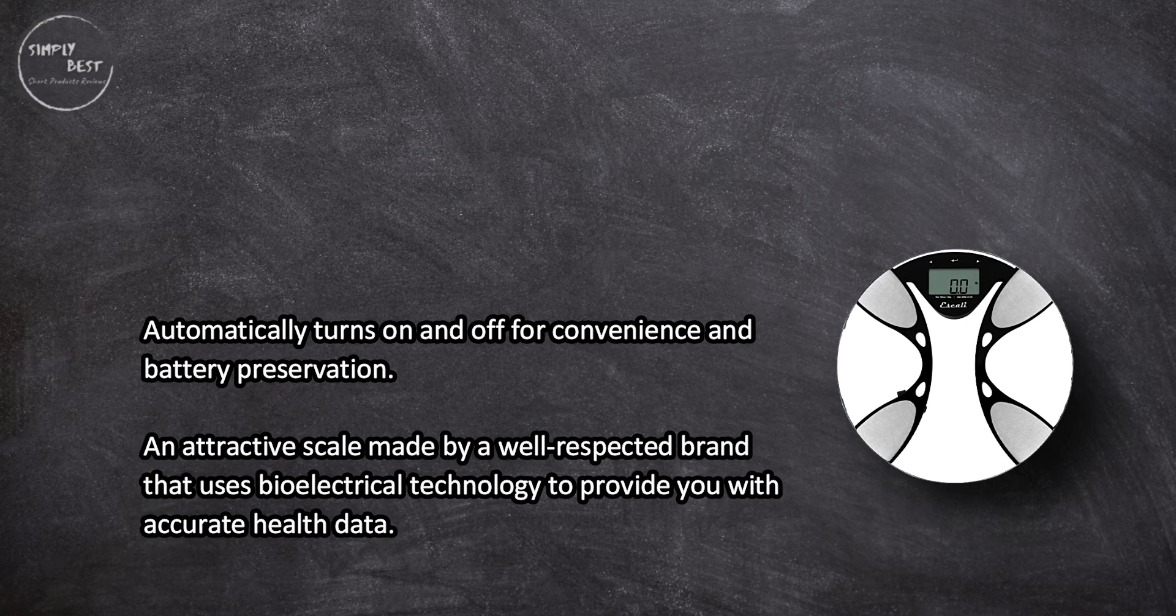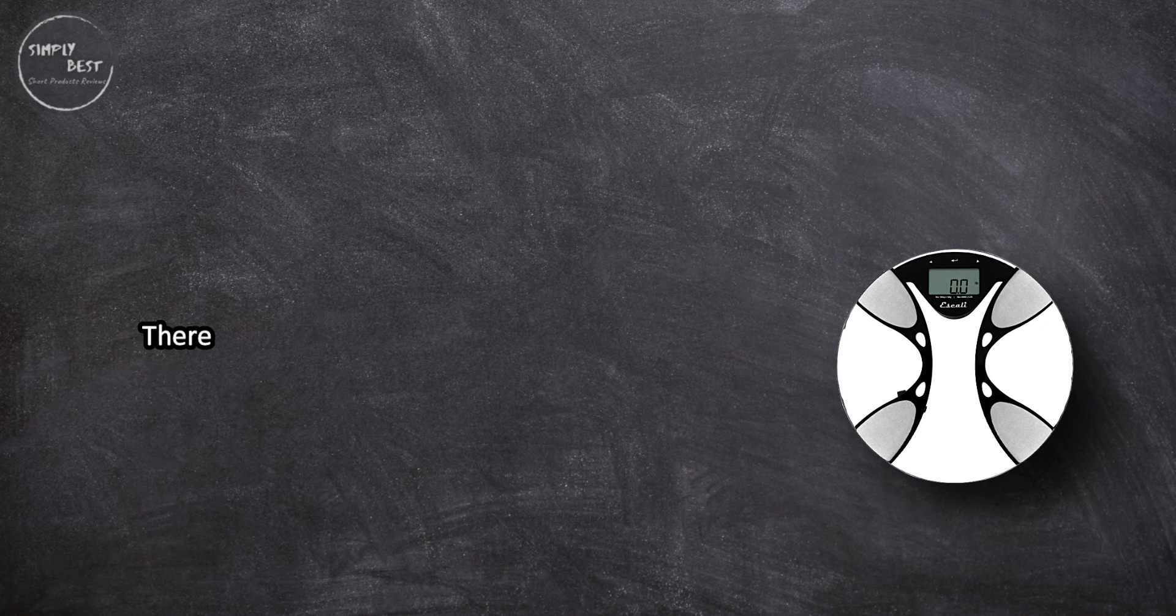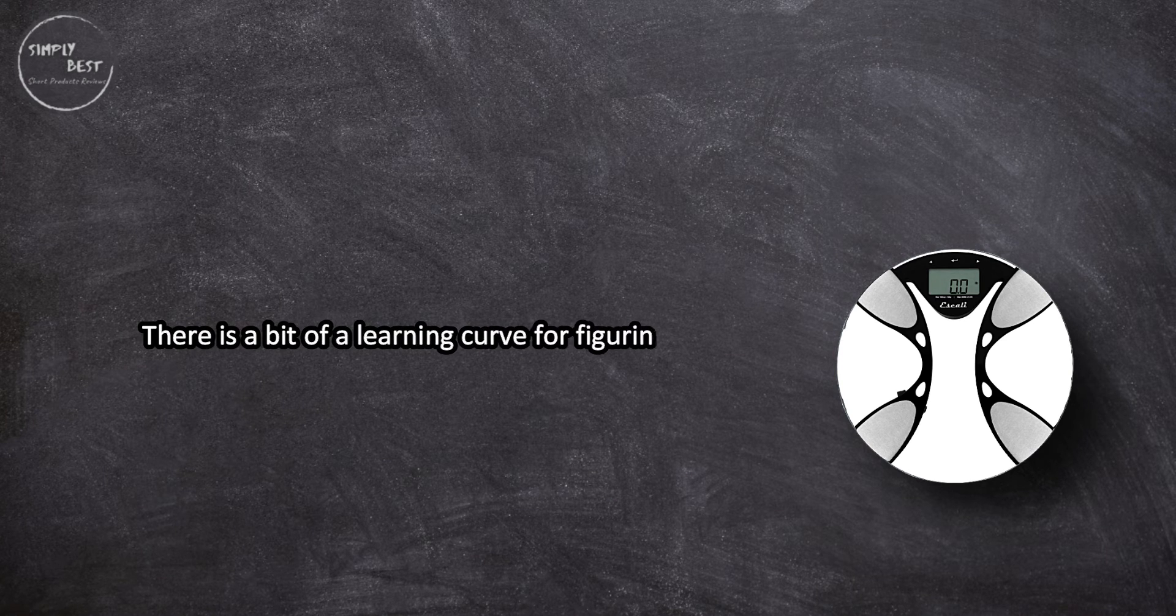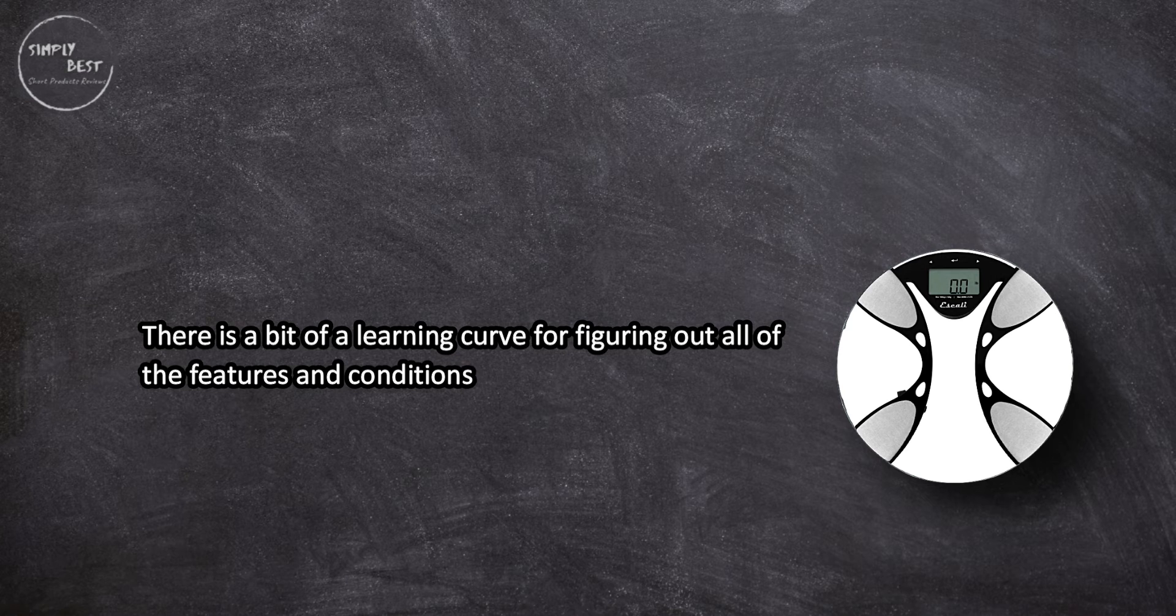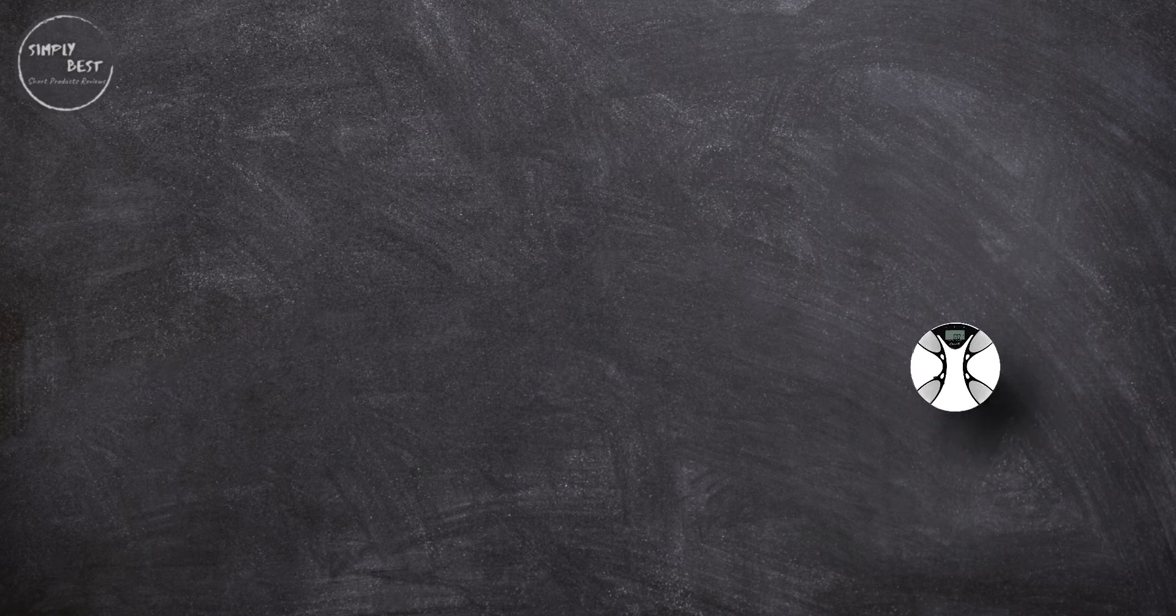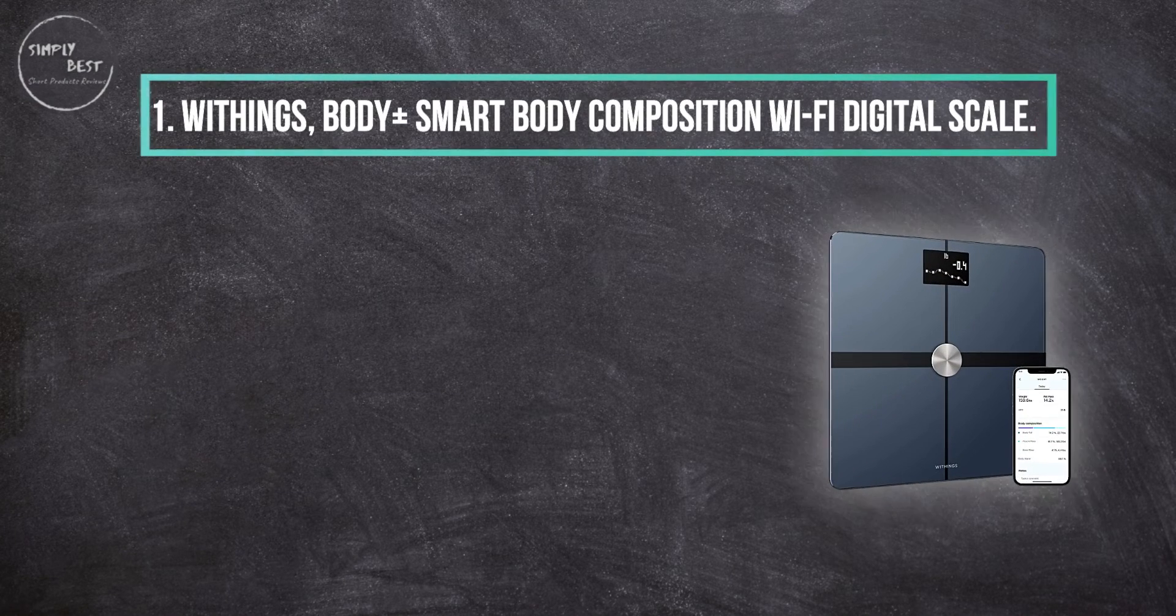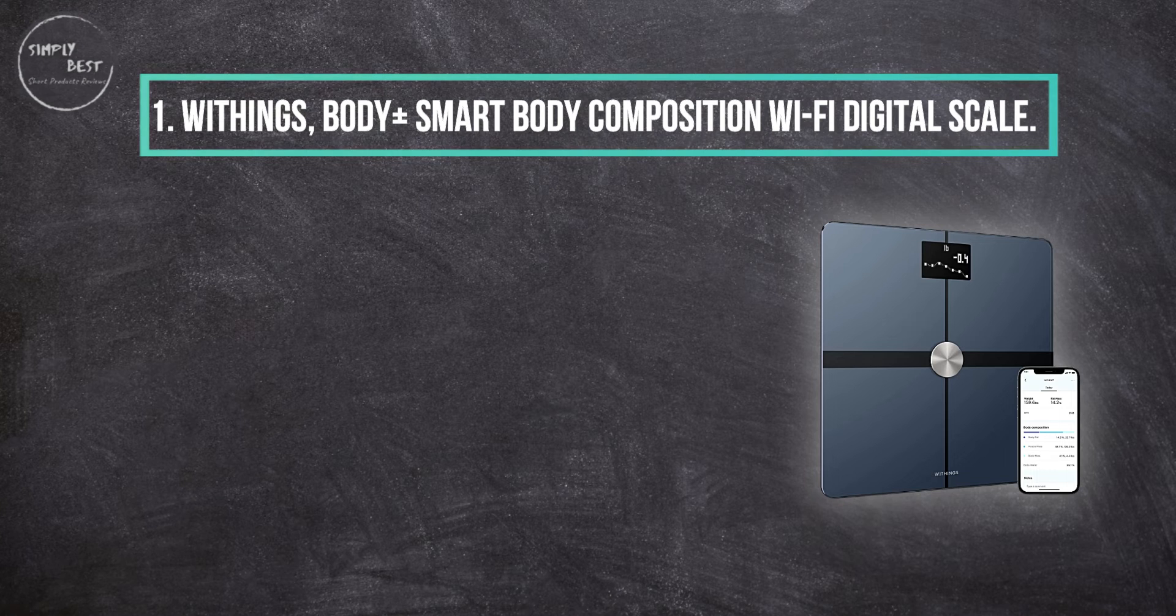To provide you with accurate health data. There is a bit of a learning curve for figuring out all of the features and conditions for best results. At number one, Withings Body Plus smart body composition Wi-Fi digital scale.